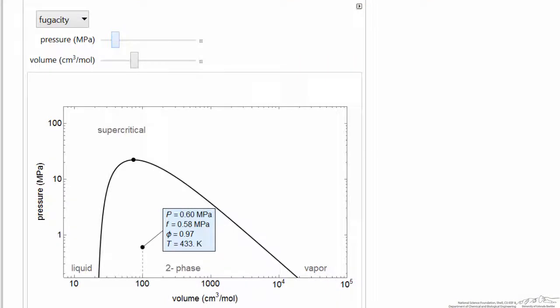So here's the interactive simulation. What this simulation does is calculates fugacity at different conditions. You can see at relatively low pressure, fugacity and pressure are almost the same. We're in the two-phase region, the fugacity coefficient 0.97, that's the same as saying fugacity and pressure are very similar.